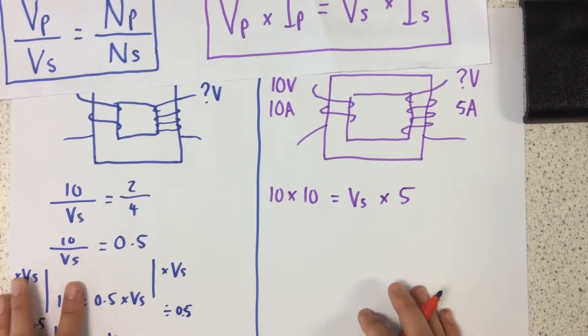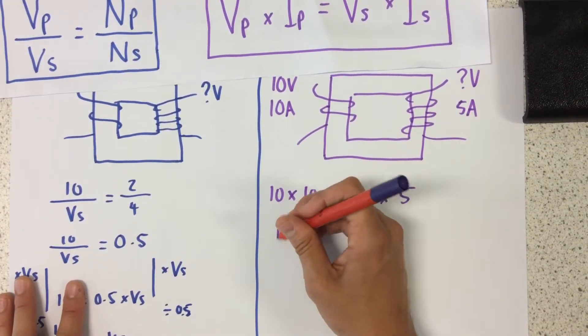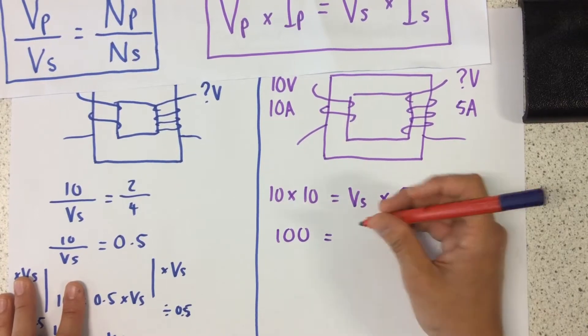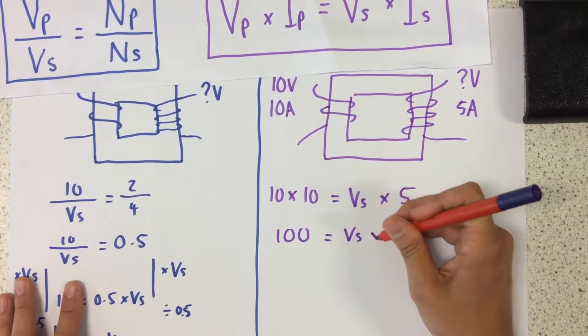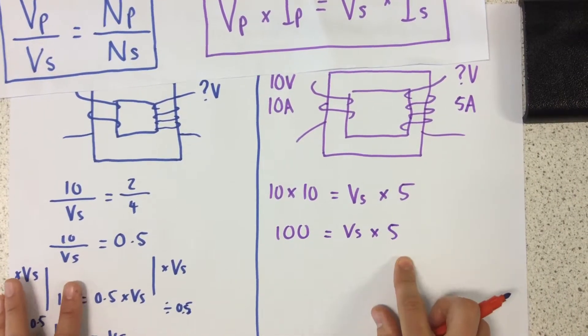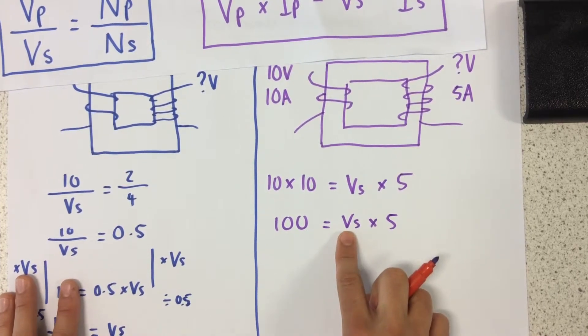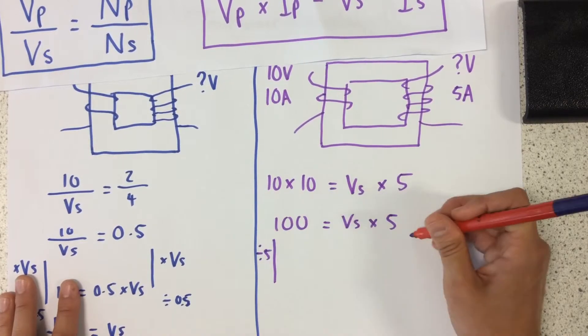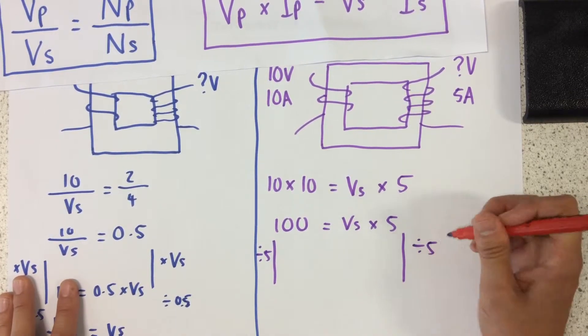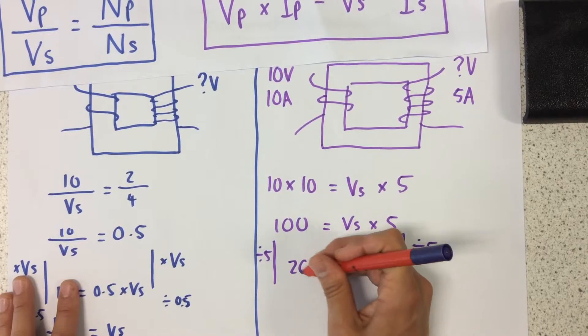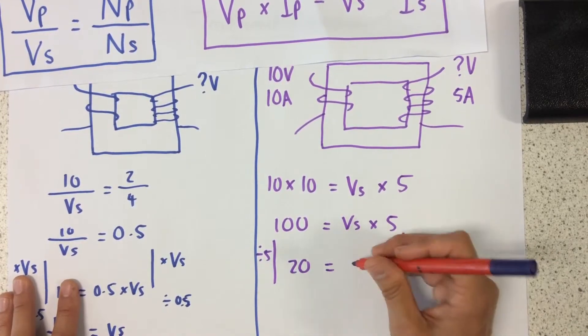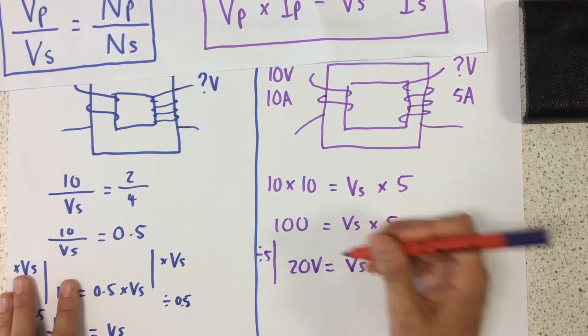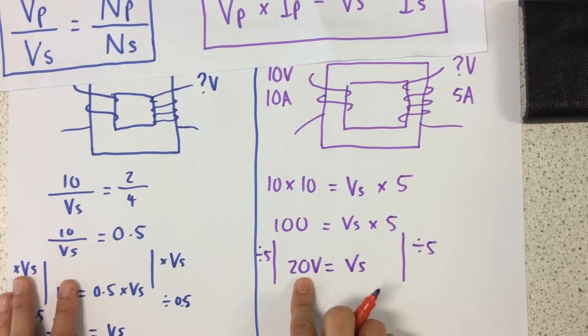So first of all, I'm just going to simplify this. So 100 equals Vs times 5. Now again, I want Vs all by itself, so all I'm going to do is divide both sides by 5. Divide that by 5, divide that by 5. So now I've got 20 equals Vs. So my Vs, my voltage at my secondary is 20.